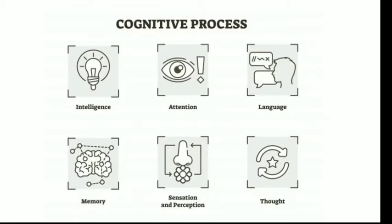Cognitive processes are like intelligence, attention, language, memory, sensation and perception, and thought or thinking. So all these things of human come into the cognitive processes and that is what is known as higher mental abilities or higher mental processes.